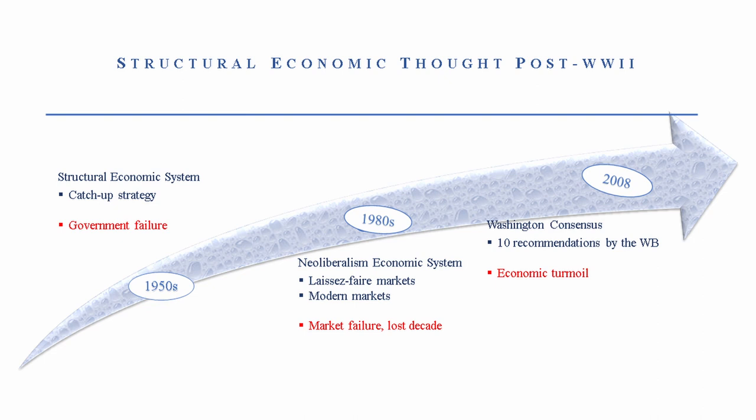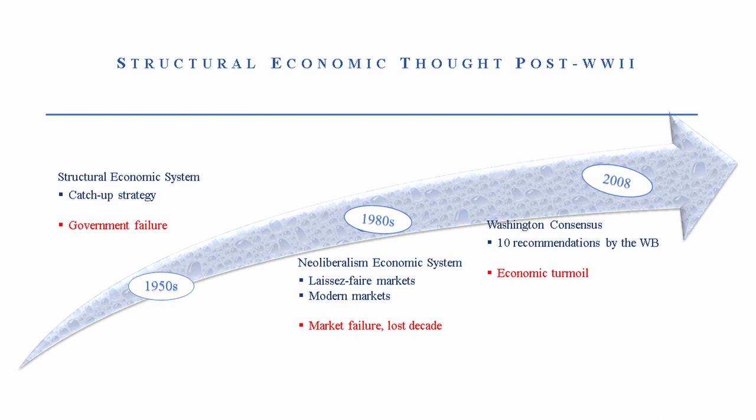Scholars like Stiglitz argue that economies that adopted the 10 recommendations from the Washington Consensus are now worse off relative to before they adopted them. These recommendations were adopted mainly by developing and African countries. So now we need to ask ourselves: if all these schools of thought were so plausible and other regions industrialized, why didn't Africa industrialize in the 1950s? What was the missing link? One thing these schools of thought ignored was defining a unique endowment resource structure for each economy. Additionally, the government played the developmental role in building industries, whereas it should have played the facilitating role and let the competitive market allocate resources efficiently.